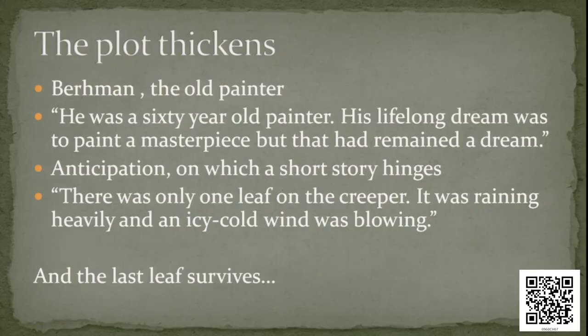The plot thickens. On a lower floor there is an old painter, Berman, a 60-year-old painter whose lifelong dream was to paint a masterpiece — but that had remained a dream. Once again, the story reinforces the condition of artists. There are the two young artists struggling in a small flat, and also this much older artist also struggling and living in poverty. Not all artists are successful. For one successful Shah Rukh Khan, there may be many failed artists like these.